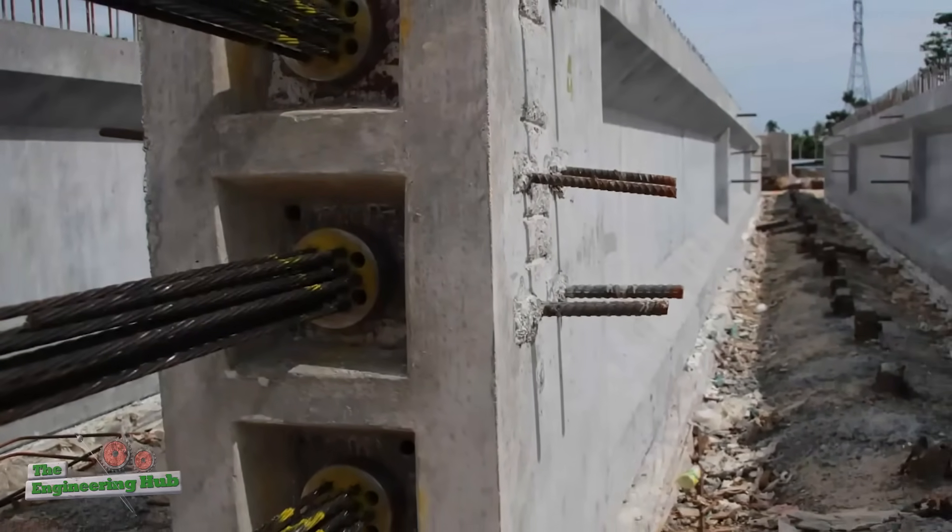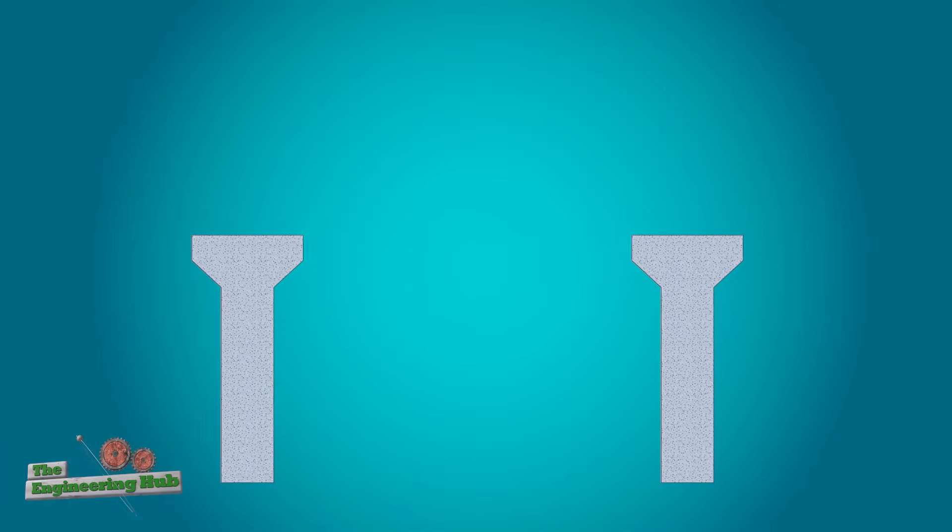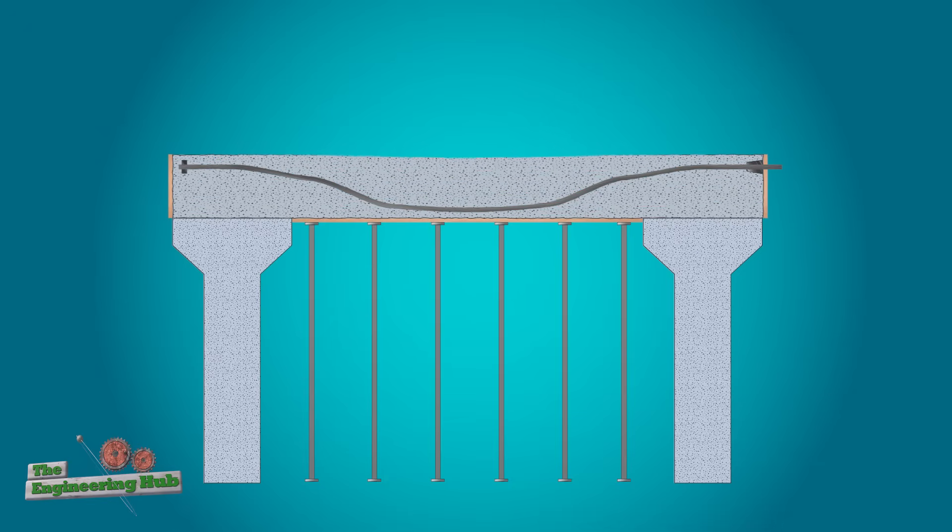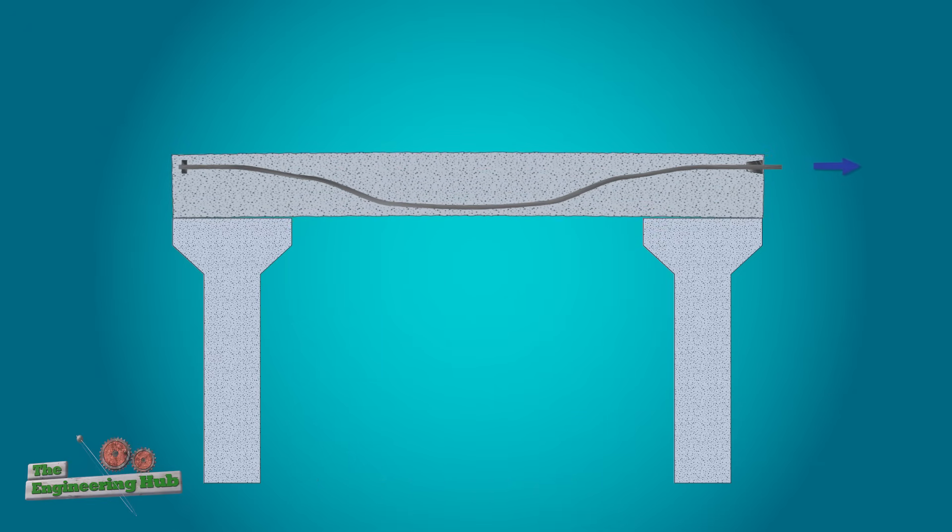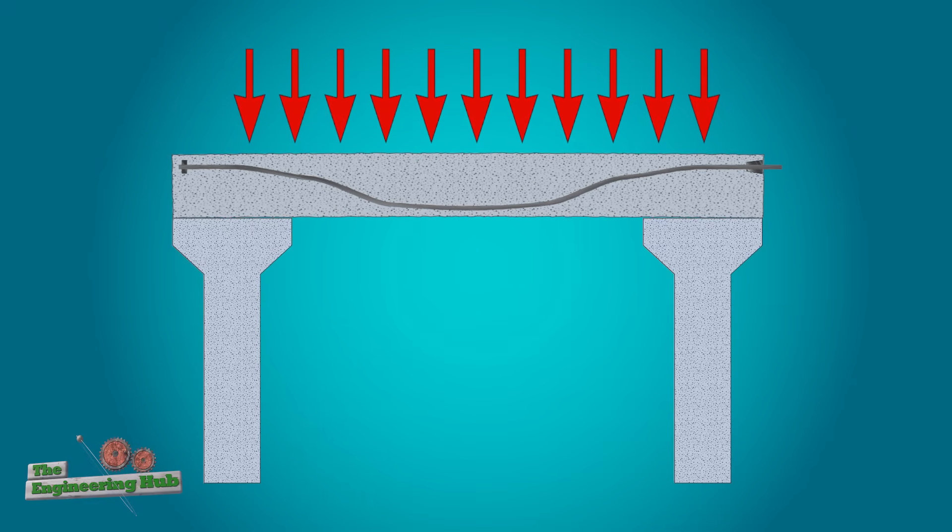We can't discuss pre-stressing without also discussing post-tensioning. Post-tension concrete is a similar active combination of concrete and steel, also generally using high-strength materials. But for post-tensioning, the pre-stress is applied on-site after concrete has cured but before the structure sees its anticipated design loads.